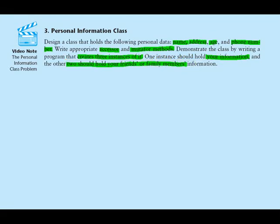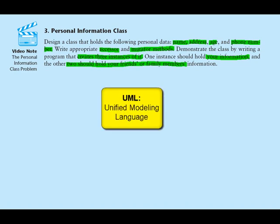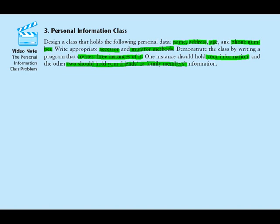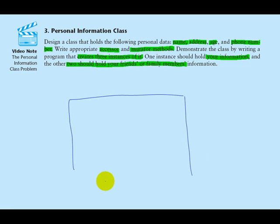The first thing we're going to do in designing this class is draw a UML diagram. UML stands for Unified Modeling Language, and earlier in this chapter you were introduced to UML as a way of diagramming object-oriented systems. Our first step is to draw a UML diagram listing all of the fields and the methods that this class will have. The UML diagram for a class is a rectangle, and I'm going to draw the upper part of the rectangle.